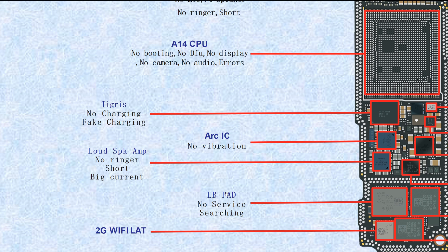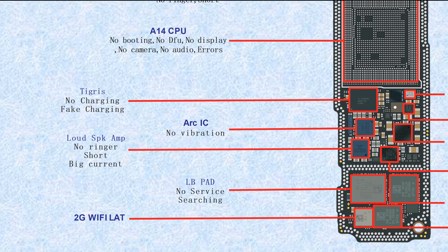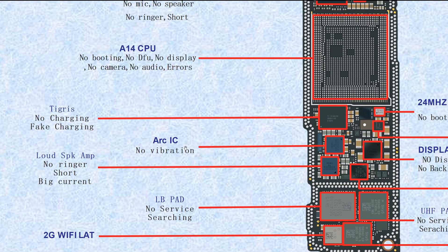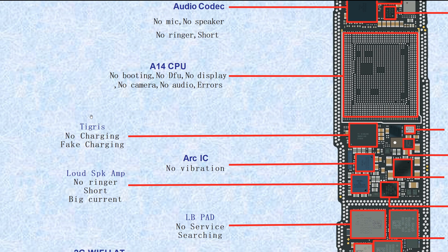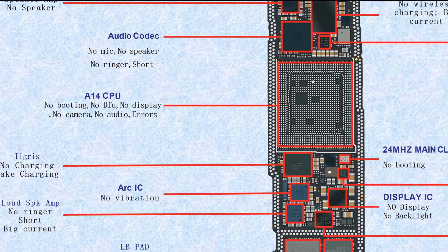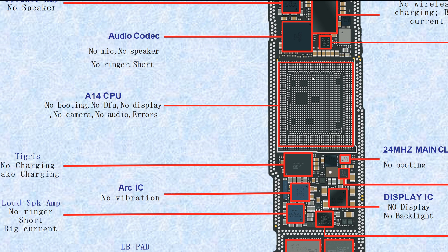This one is the loudspeaker amplifier — for hands-free. If broken, it causes no ringer or high current. This one is the ARC IC — ARC here means vibrator, vibration IC. If broken, it causes no vibration. This one is the charge IC. If broken, it causes no charging or fake charging.